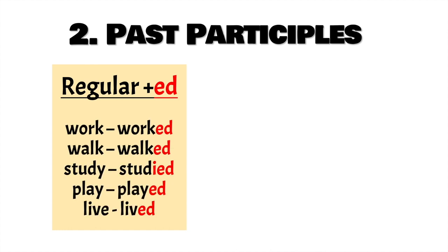Now let's take a look at past participles. Past participles can be regular or irregular. Regular: we add ED at the end of the verb. Like in work → worked. Walk → walked. Pay attention to this one: study → studied. So, we take out the Y and we add IED. Why? Because before the Y, there is a consonant. So then, yes, we can change it to I. Y changes to I. Instead, play → played. Played does not change because before the Y, there is a vowel — the A. So it stays the same. The Y acts as a consonant. And then we have another example: live → lived. We just add D, and not double E.